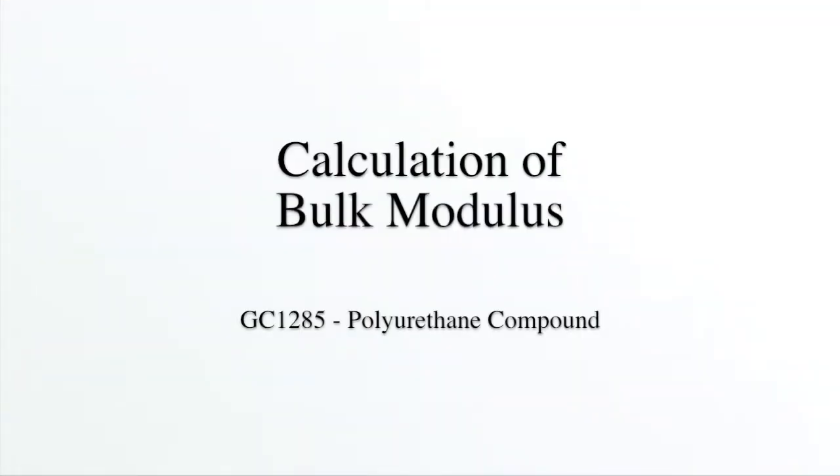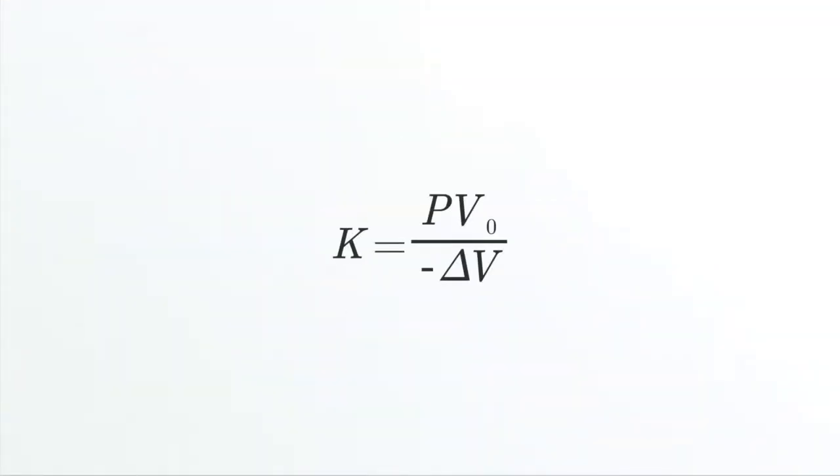Now we'll go through the calculation of the bulk modulus. Here we have the bulk modulus formula, which is the pressure times the initial volume divided by the change in volume.